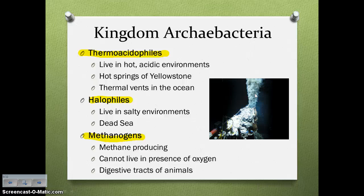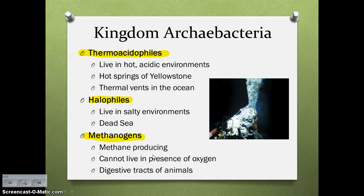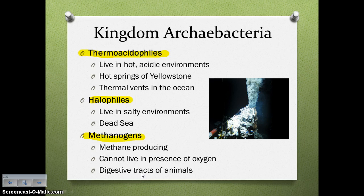Thermoacidophiles — 'phile' means loving — so they love thermal, acidic, hot environments. These are the archaebacteria that live in the hot springs of Yellowstone or in the deep sea vents of the ocean. Halophiles love salty places, so they live in very salty environments like the Dead Sea. Methanogens are methane-producing archaebacteria that cannot live in the presence of oxygen — they are anaerobic. They live in places like the digestive tracts of animals, where they produce methane, which leads to flatulence.